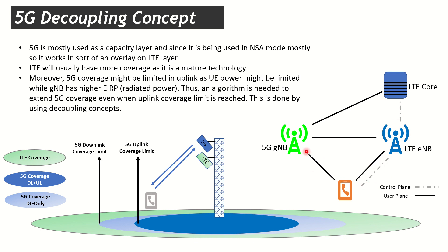Let's see how a typical 5G NSA network looks. We have a 5G node paired with LTE. LTE has a much bigger footprint because it's a mature technology, while 5G is mostly being added at the capacity layer, so it has a lower footprint. It's going to be patchy for a long time until we have carpet coverage of 5G.